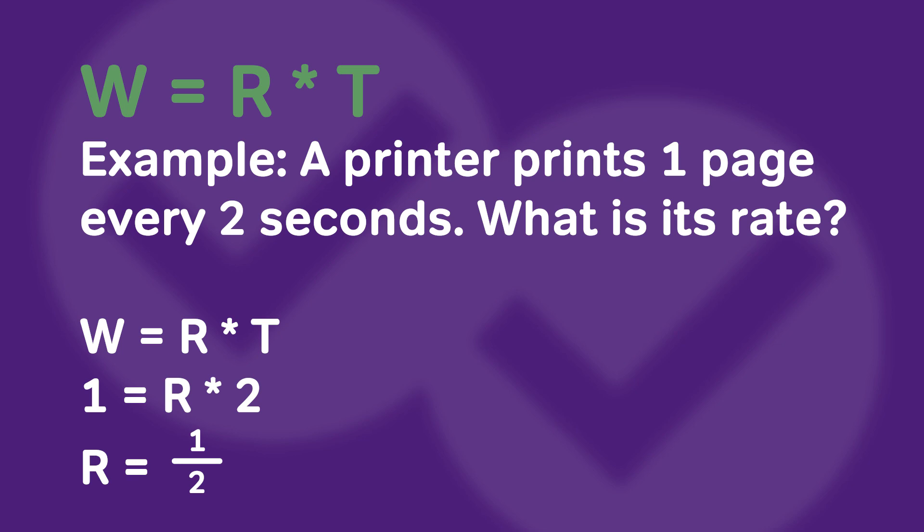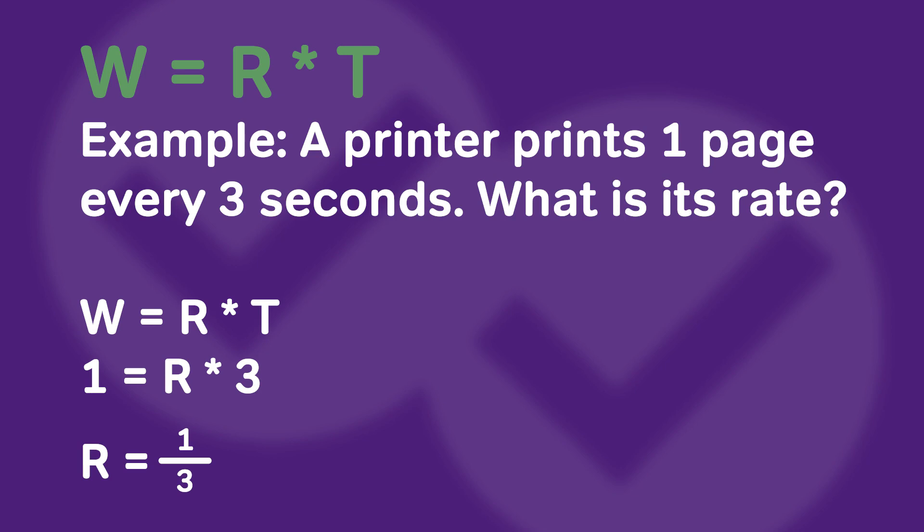As a second example, if we have another printer that prints one page every three seconds, what is its rate? Here, work is one page, time is three seconds. Plugging that in, we get that the rate is one over three, or one page per three seconds.